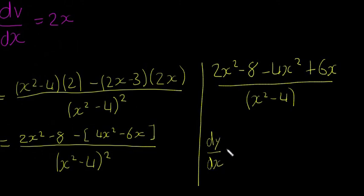for dy/dx is going to equal minus 2x squared plus 6x minus 8, all divided by, oh sorry, that's squared, x squared minus 4 squared.